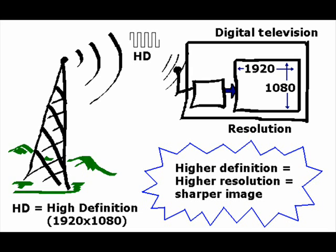On the other hand, high definition displays the image in a grid with more horizontal and vertical pixels. For example, 1920 pixels across and 1080 pixels down. This is not the only resolution that can be called high definition. High definition means more resolution and that in turn means a sharper image.